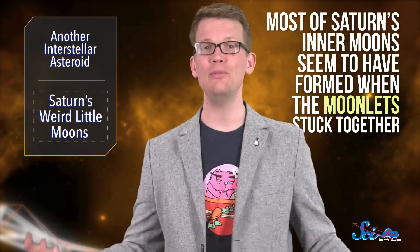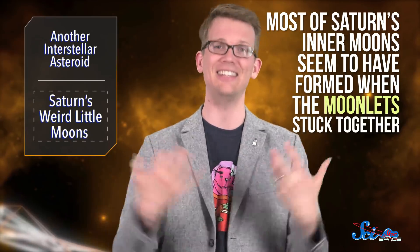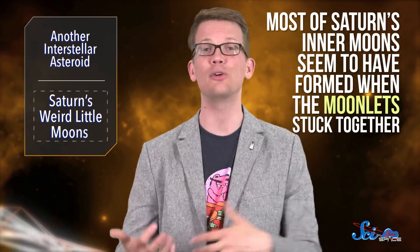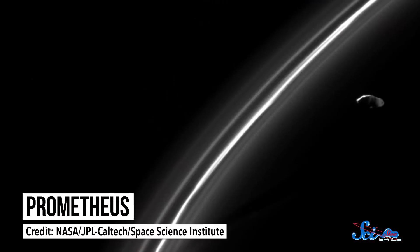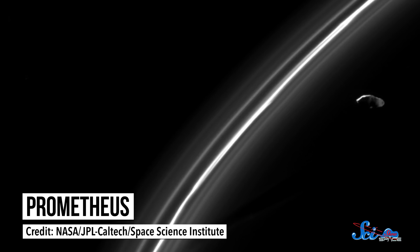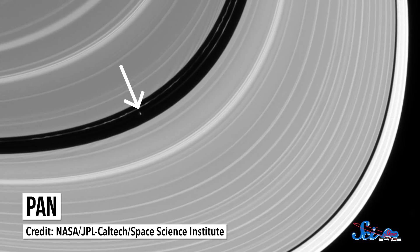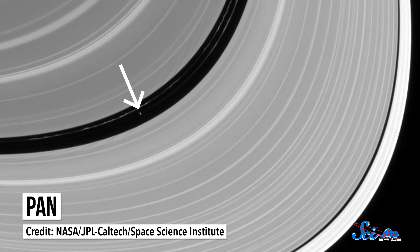Most of Saturn's inner moons seemed to have formed when the moonlets stuck together, and their weird shapes were specifically determined by the angle at which they collided. In the simulation, oblique collision angles gave more oblong, burrito-like shapes, creating moons like Prometheus.